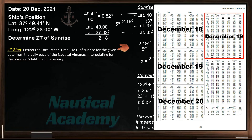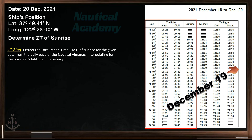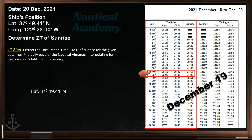Our first step is to extract the local mean time of sunrise for the given date from the daily page of the Nautical Almanac, interpolating for the observer's latitude if necessary. Since 20th of December belongs to this daily page, we will use the data of sunrise on this page for our first step, which is 19th of December. Now we need to find the time of sunrise for this latitude, but it has no exact value here, so let's interpolate.